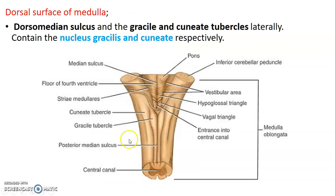On the dorsal surface of the medulla, we have a dorsal median sulcus at the midline. Lateral to it we have the gracile tubercle containing the nucleus gracilis. After that we have the cuneate tubercle containing the nucleus cuneatus. So the dorsal surface has the dorsal median sulcus, followed by gracile tubercles containing nucleus gracilis, then cuneate tubercles containing nucleus cuneatus.